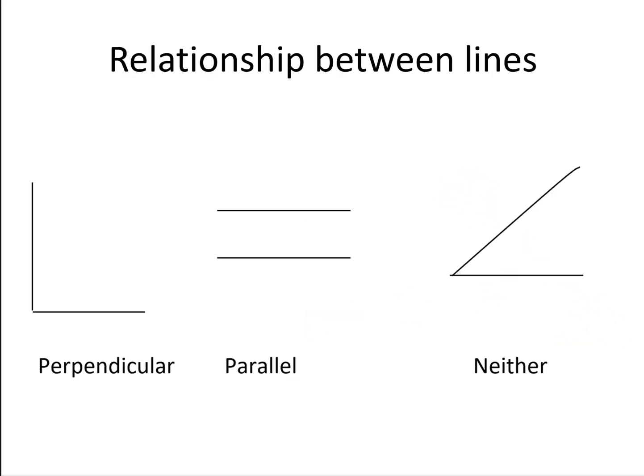The relationship between lines can be perpendicular, that is at right angles, and we often have a little box in the corner here to designate that it's perpendicular.